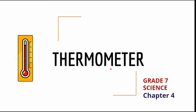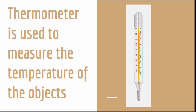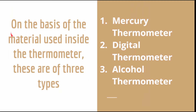As you know, a thermometer is used to measure the temperature of objects. On the basis of the material used inside, thermometers are of three types: mercury thermometer, in which mercury is filled inside; digital thermometer, which has no liquid inside; and alcohol thermometer, in which alcohol is the liquid used inside.